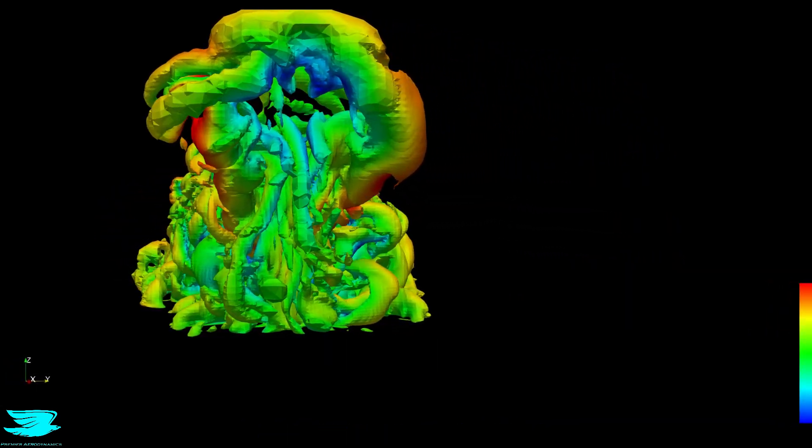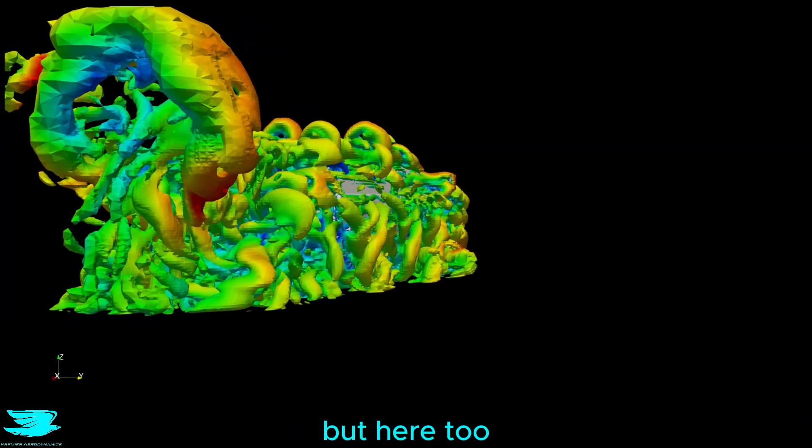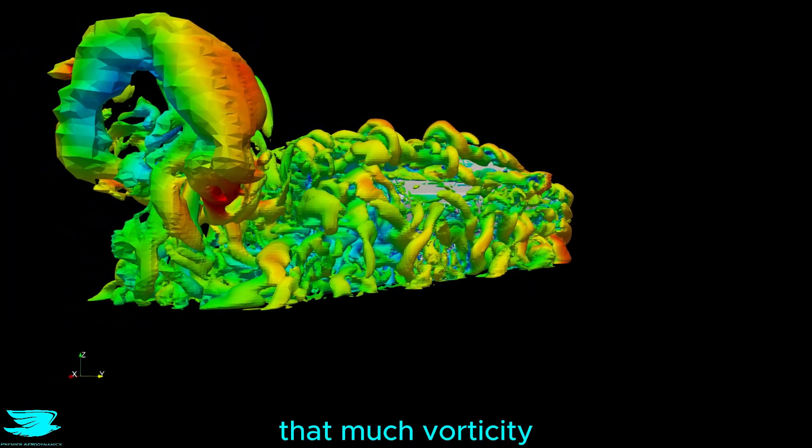As expected, at the rear of the cab there are so many vortices, but here too we see that the A pillar isn't creating that much vorticity, which is great.